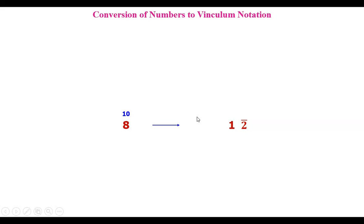The meaning of bar 2: when you convert this number to bar 2, whatever you have beside this number — here we have zero — add one to that. So zero plus one is one. The actual meaning is: 10 minus 2 is 8. This 10 in the tens place, 10 minus 2 is our number in the decimal system. This way of writing numbers in smaller form is called vinculum notation.